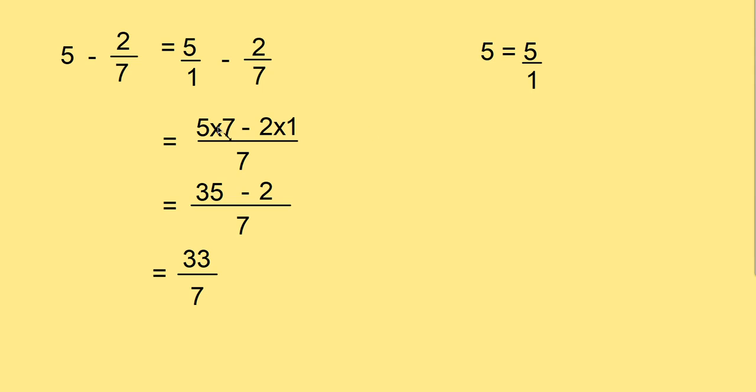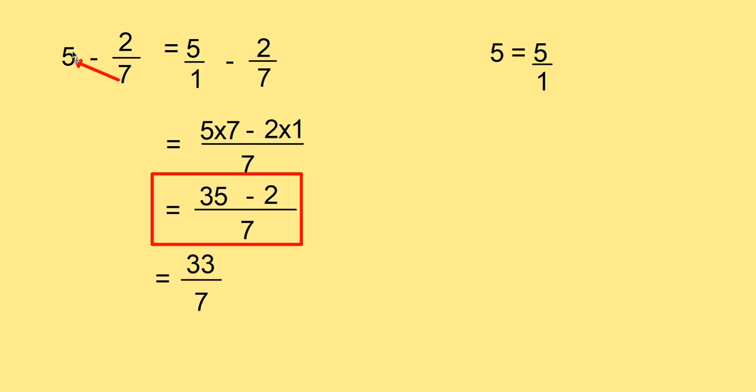The same 5 into 7 minus 2 into 1 by 7. You will get from the question itself. If you multiply 7 into 5 first, and minus 2, and take 7 as denominator, then also you will get the answer. This 35 minus 2 by 7, you can directly get from this question. That is, 5 into 7, 35 minus 2 divided by 7. This way also, directly also, you can find out the answer in this case.